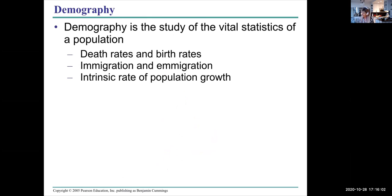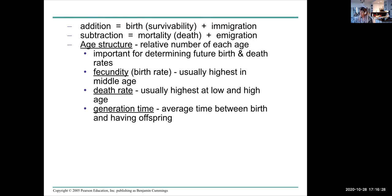Demography is the study of the vital statistics of a population, looking at death rates, birth rates, immigration numbers, emigration numbers. We can estimate the intrinsic rate of population growth, which is how many offspring individuals have. Addition is births and survivability at different ages and immigration. Subtraction—we subtract those that have died, mortality and emigration. We look at the age structure of a population. The age structure is the relative number of individuals of each age, and that's important for determining future birth rates and death rates.